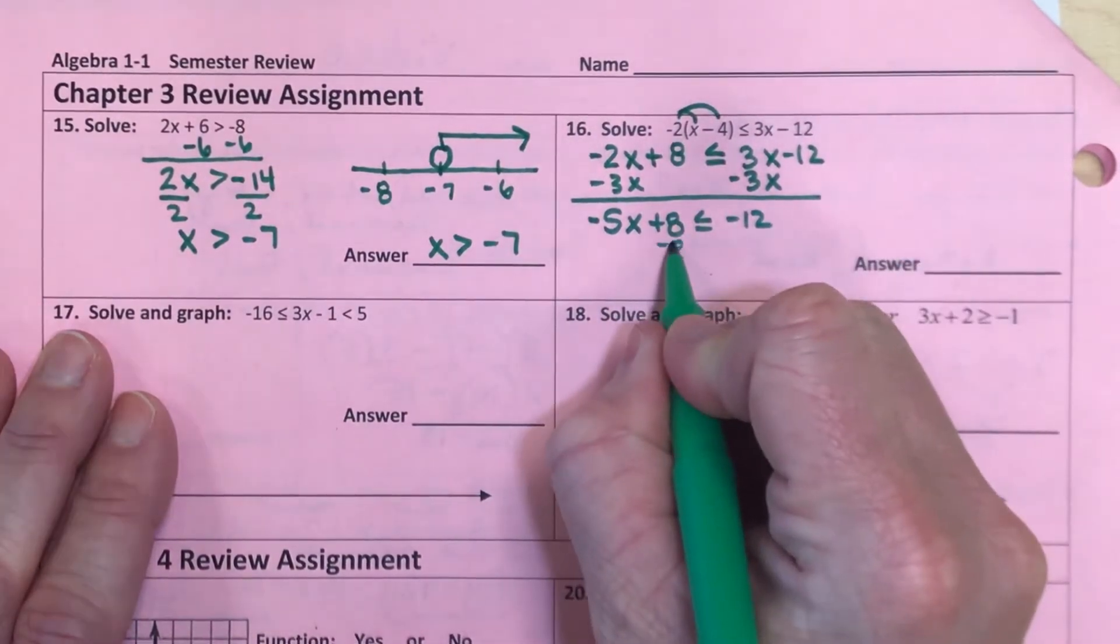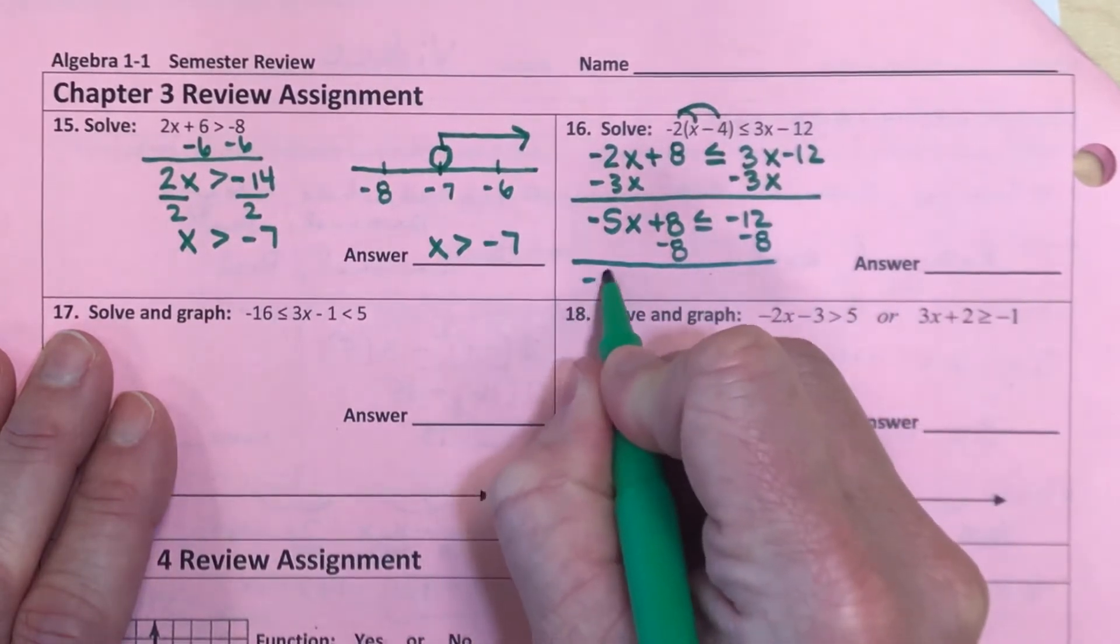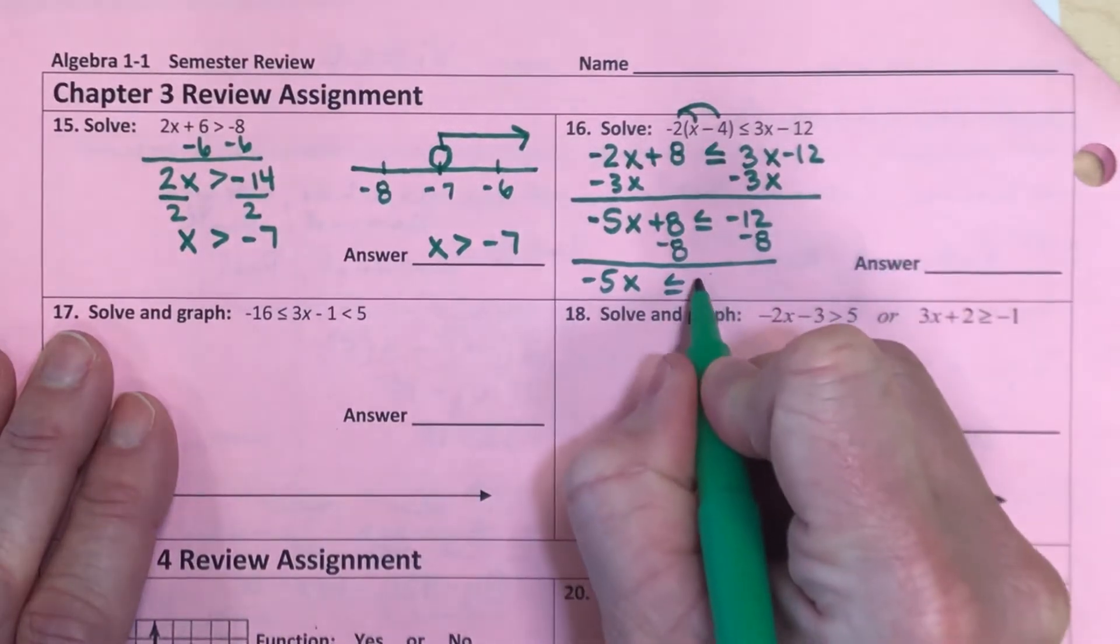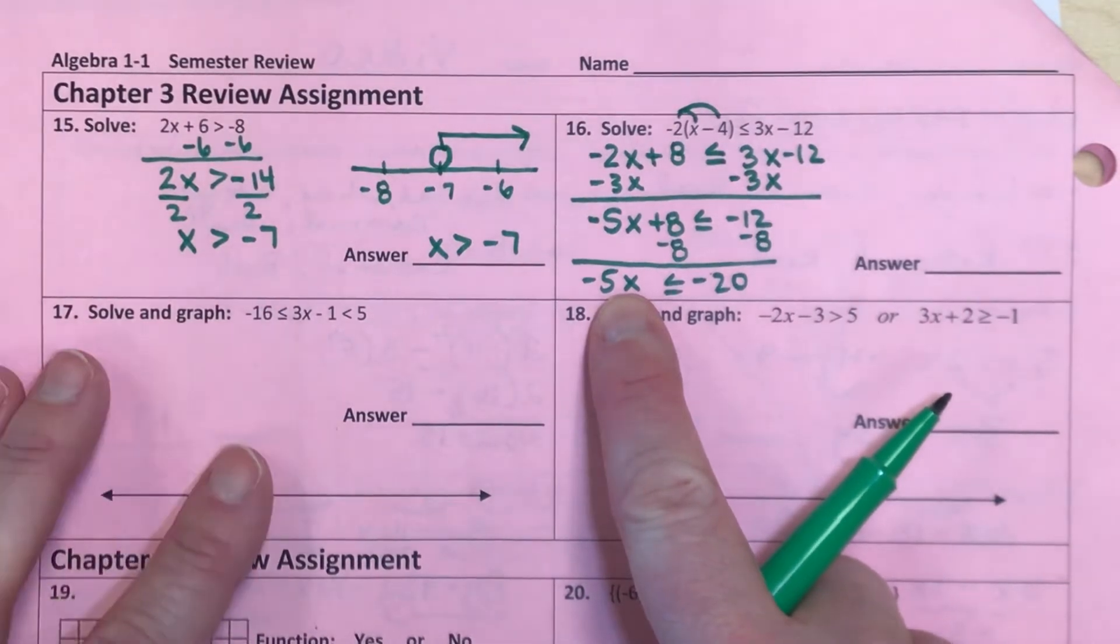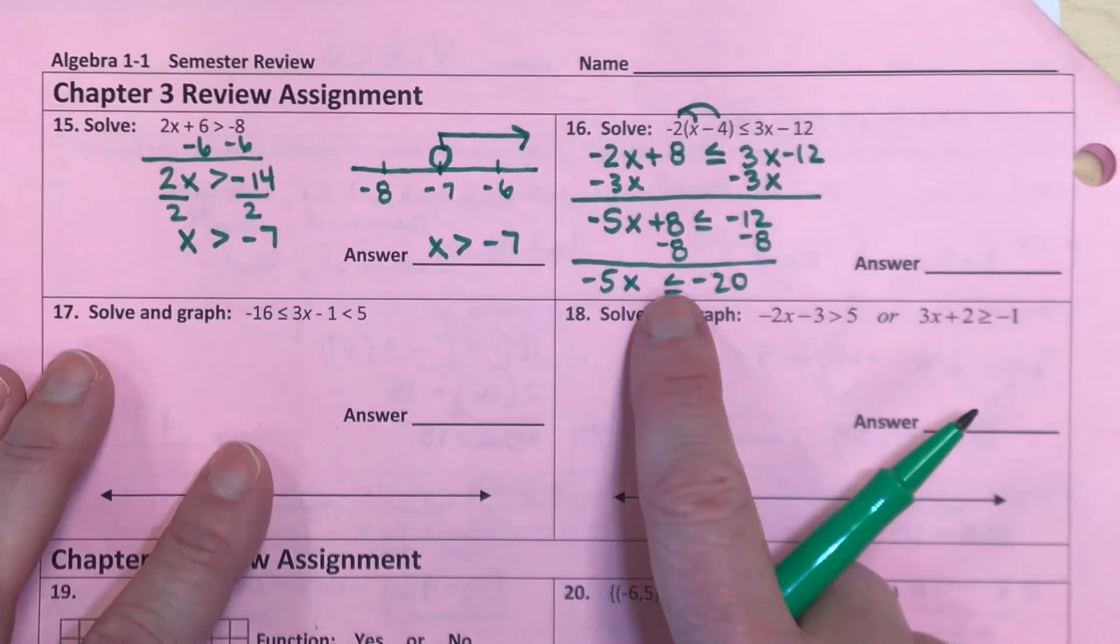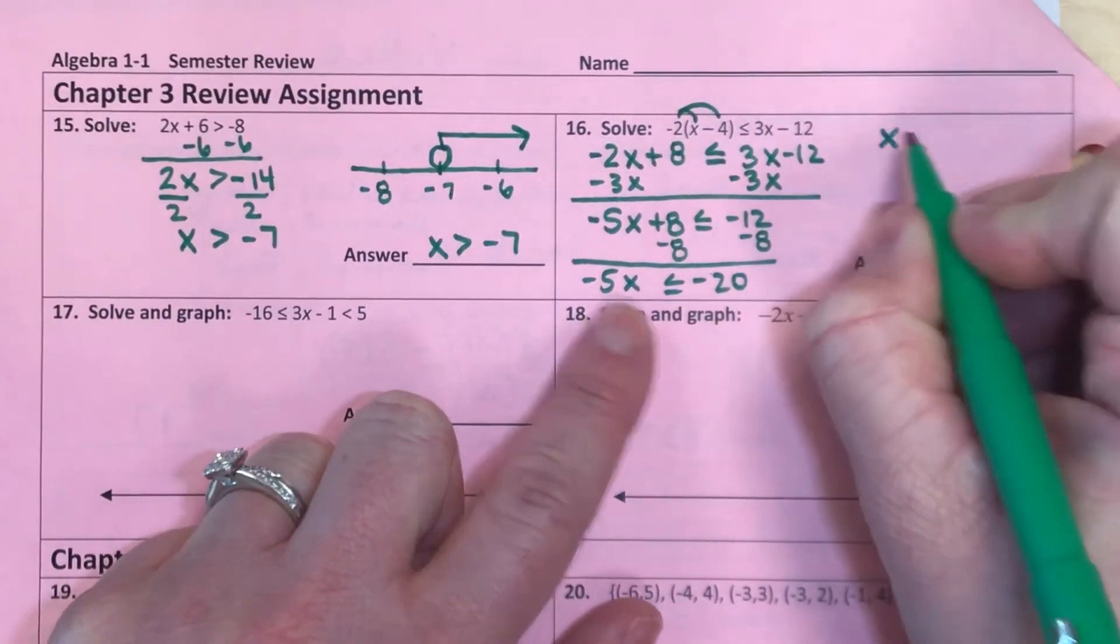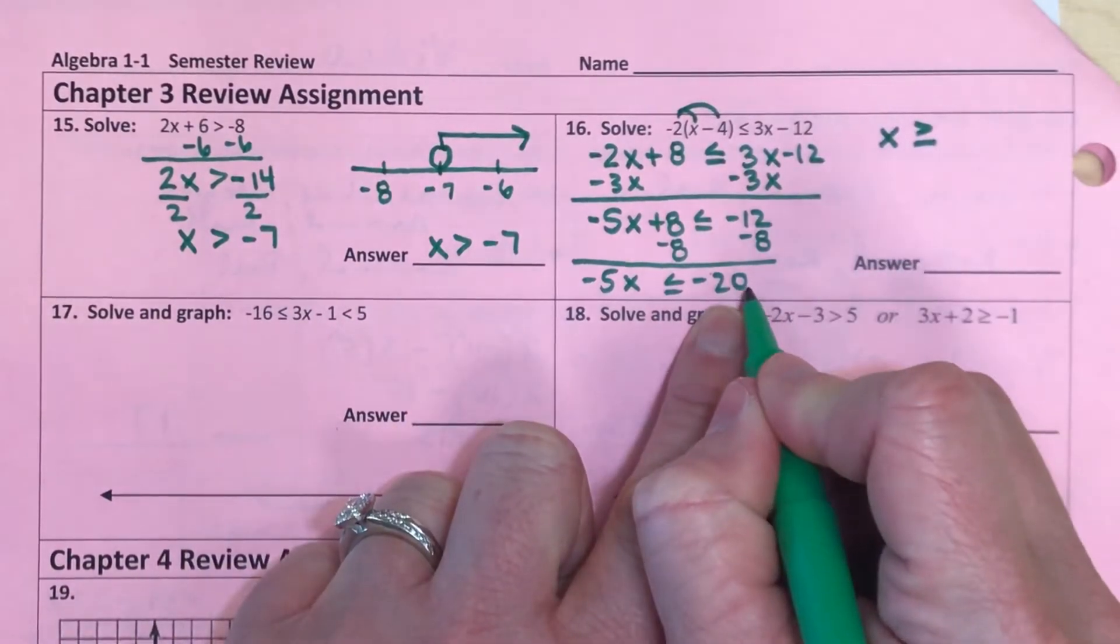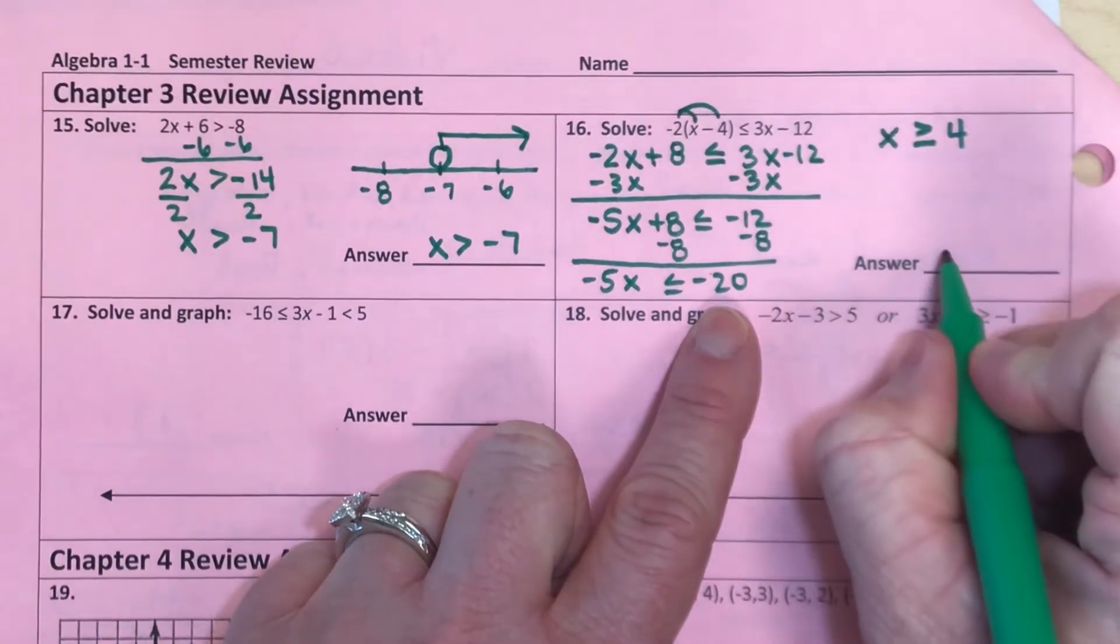And now if I subtract my 8 over to the other side so my x's are alone, I have negative 5x is less than or equal to negative 20. Now, if I divide or multiply by a negative number, the inequality sign in the middle is going to flip directions. So if I divide both sides by negative 5, my inequality sign is now going to flip. And a negative 20 divided by negative 5 is positive 4. And that's actually going to be our answer.